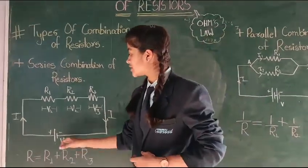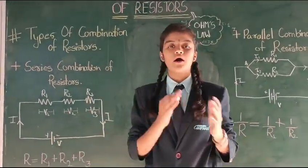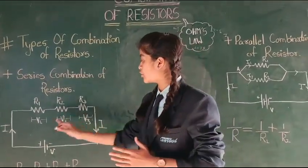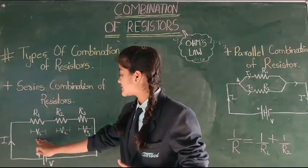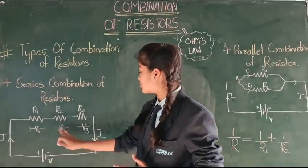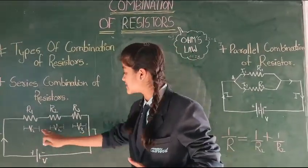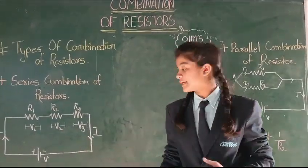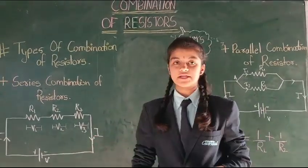To find the total voltage, we need to do the sum of individual voltages, which is V1 plus V2 plus V3. Then we can get the total voltage.